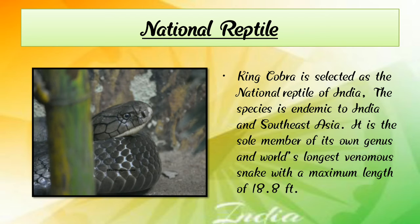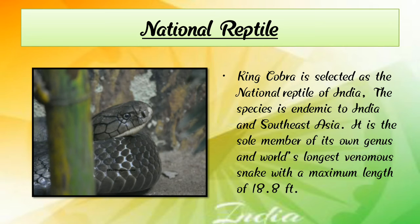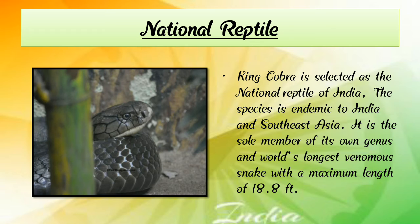Now next, national reptile. Here we can see a cobra. King Cobra is selected as the national reptile of India. The species is endemic to India and Southeast Asia. It is the sole member of its own genus and the world's longest venomous snake, with a maximum length of 18.8 feet. Children, our national reptile is the King Cobra.